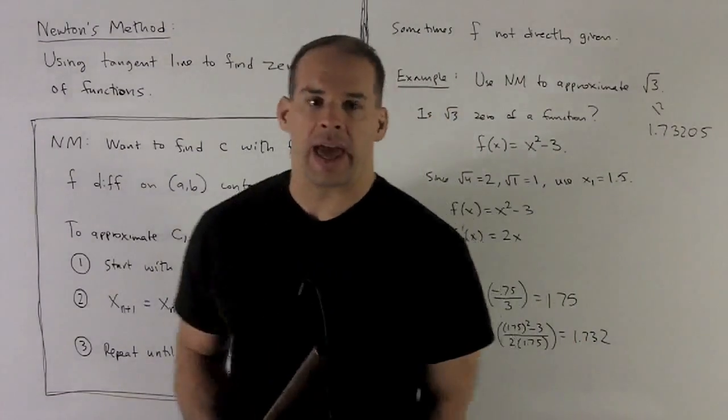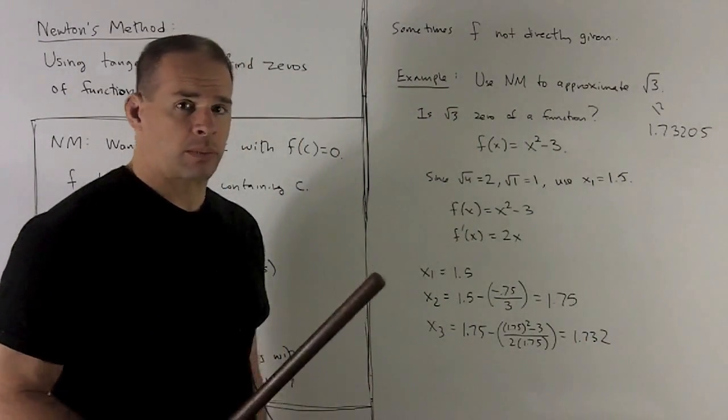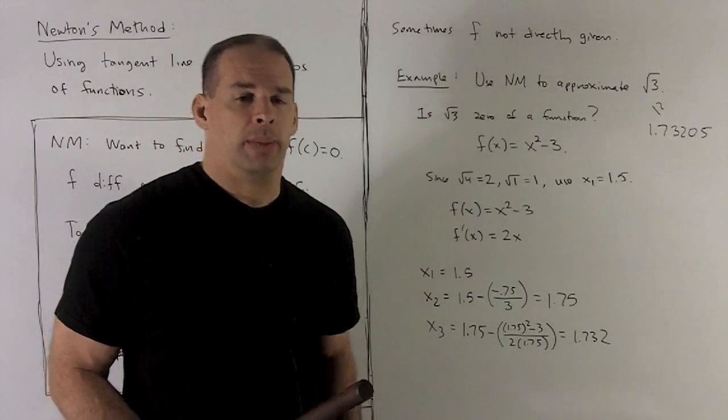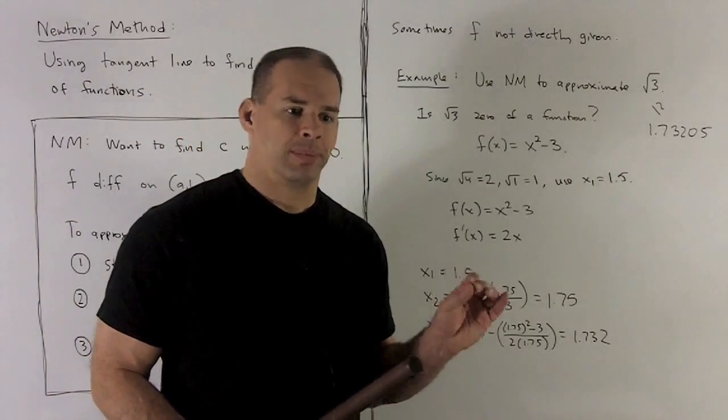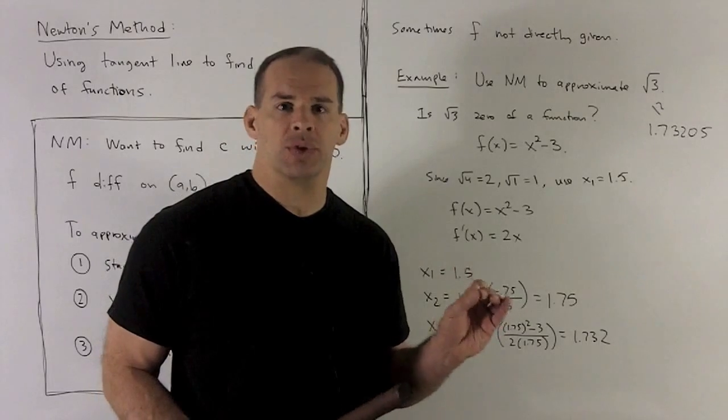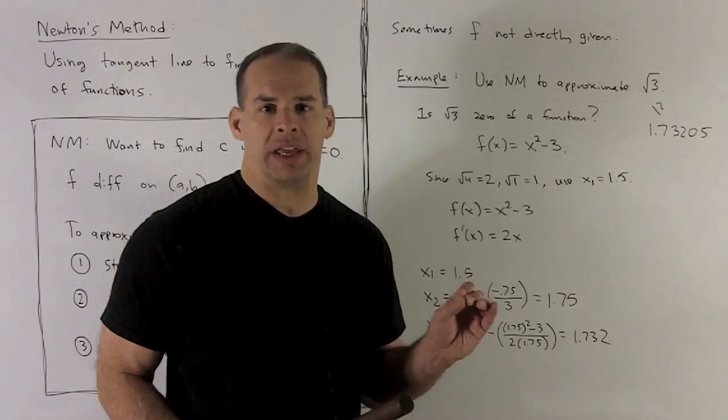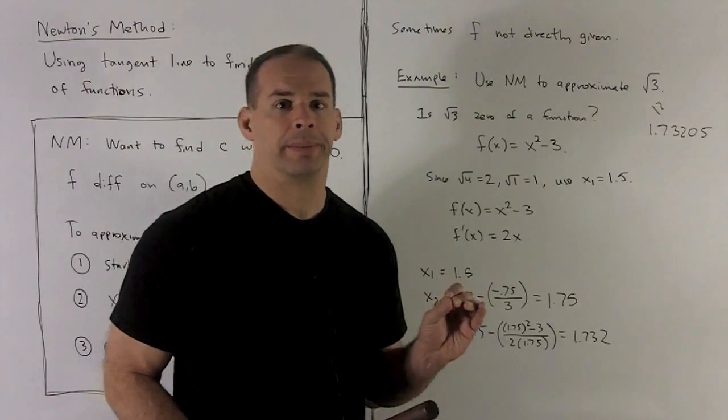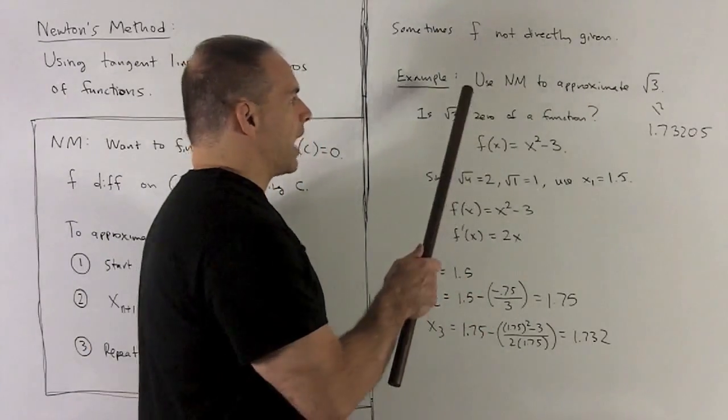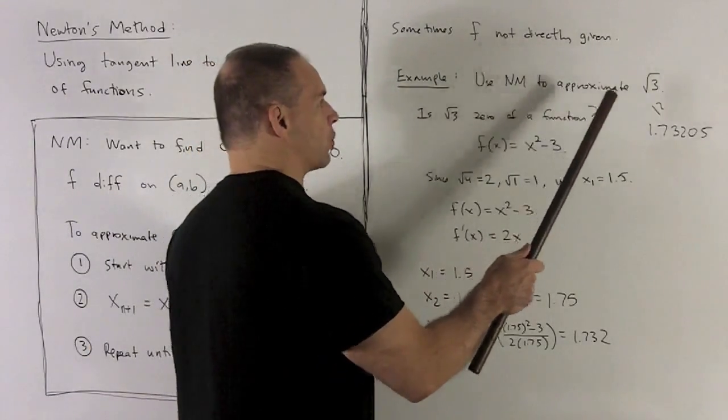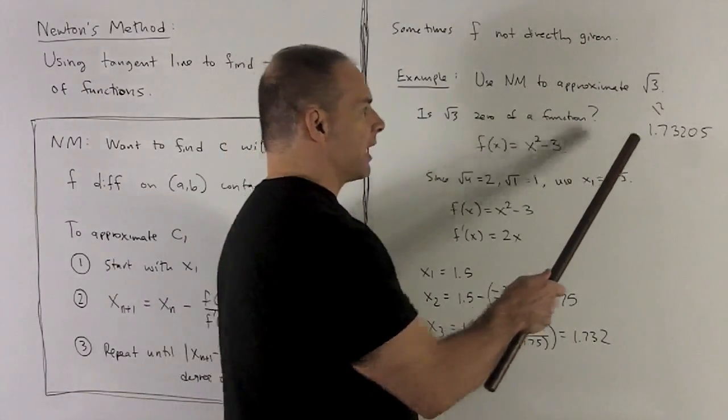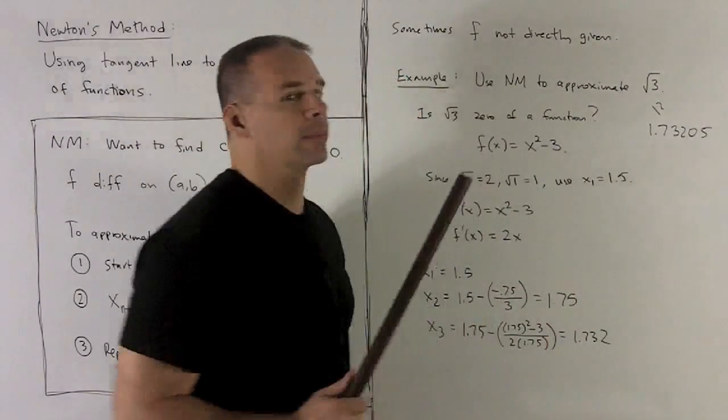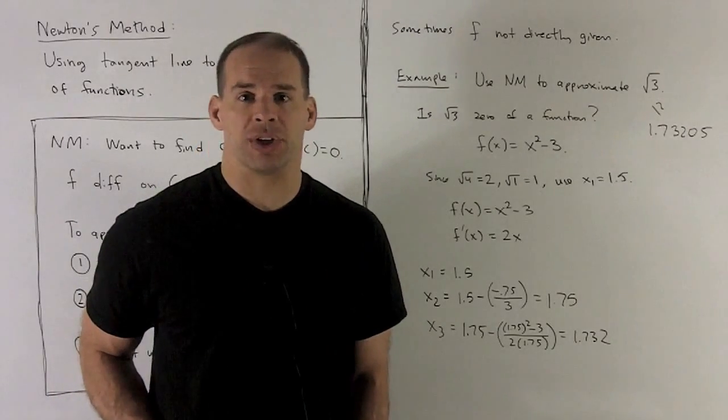Let's take a look at an example. One thing we need to worry about with Newton's method, you may be asked the question to be solved using Newton's method, but the function that you need may not be given. So you have to stare at your problem and figure out what you're trying to do. For instance, if I'm asked to use Newton's method to approximate the square root of 3, in the calculator, we'll get 1.73205 for this. I have to figure out what function I'm going to use.